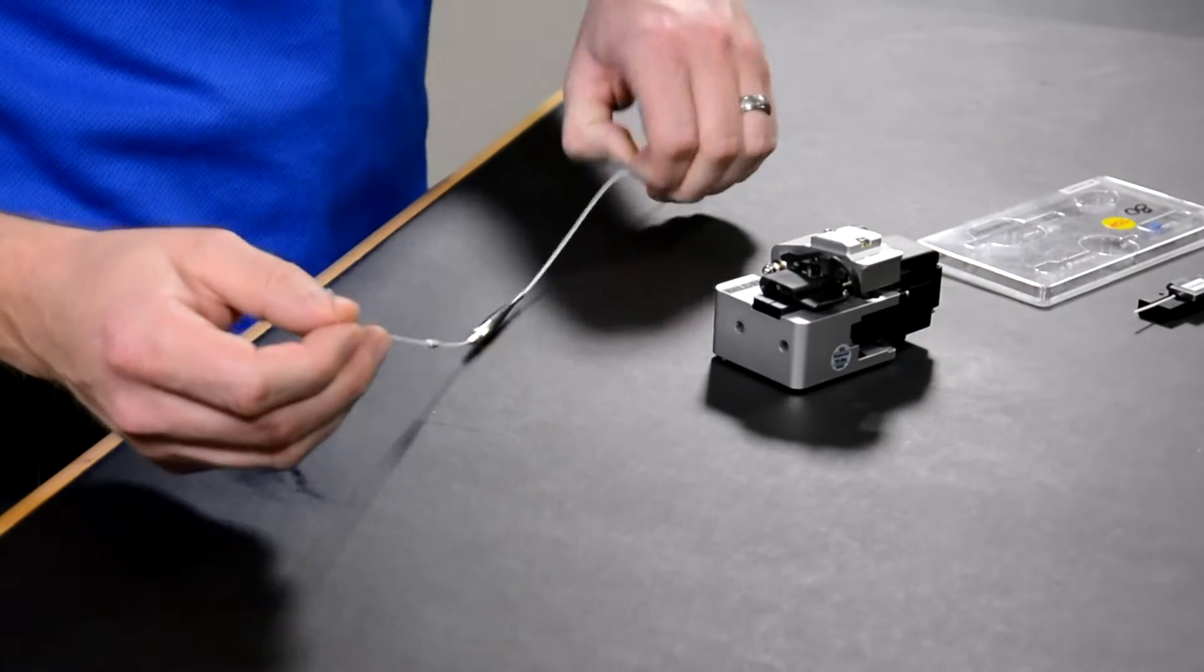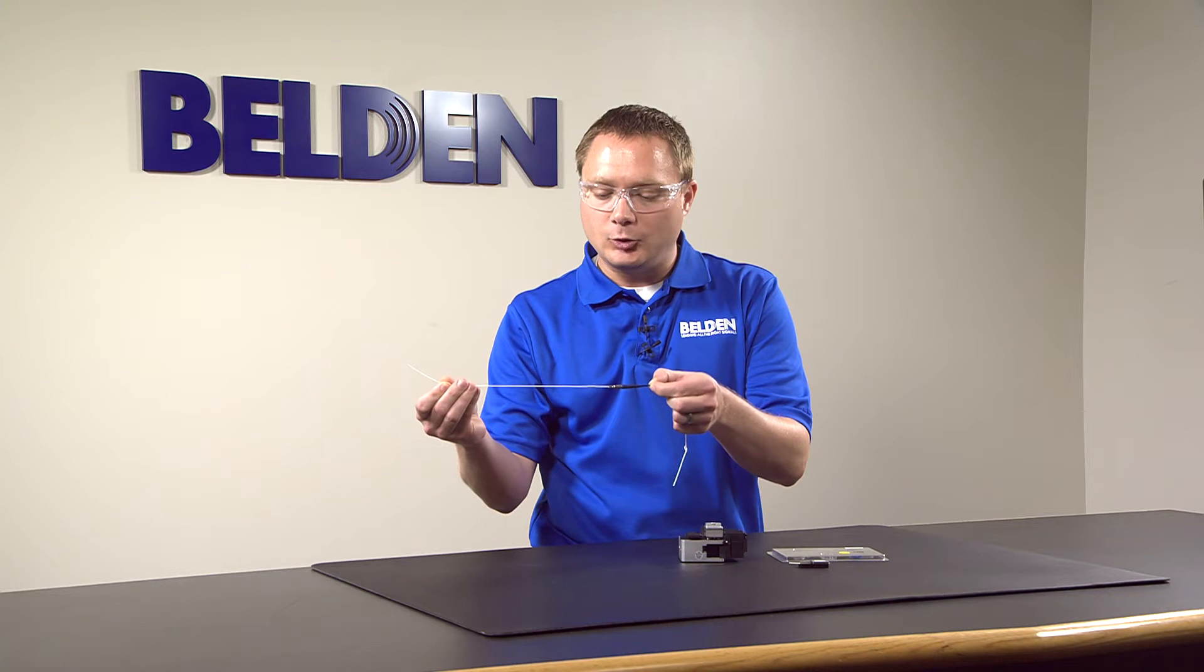Now that I've stripped and cleaved the fiber in the previous video, for this step we will need our prepared fiber with our installed boot and heat shrink tube and spring.